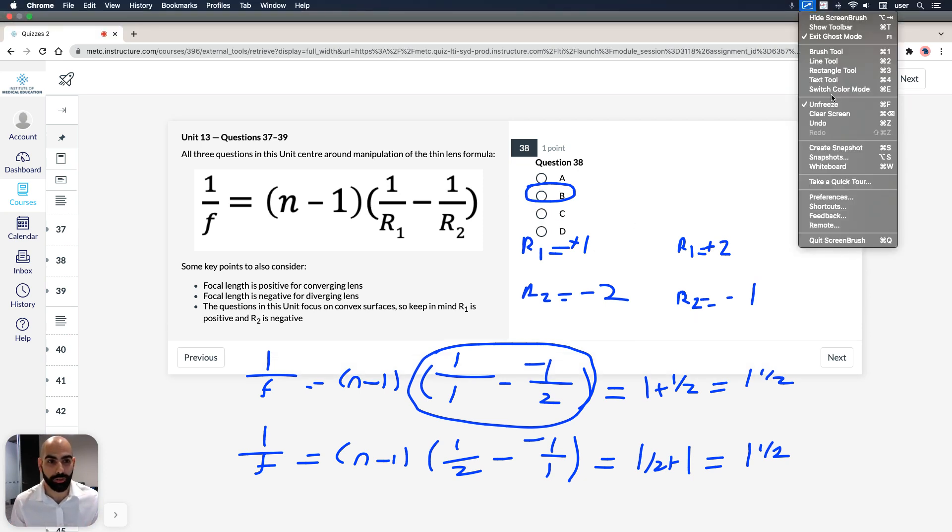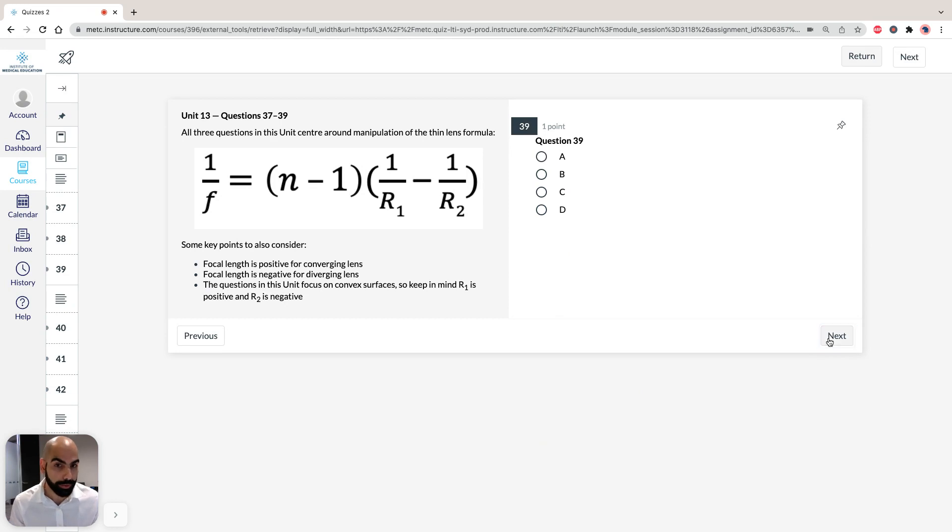So now, last question, 39. It requires some arithmetic, but again, just have to use some brain power here. It says, consider a symmetrical bi-convex lens that has a focal length as long as its radius of curvature. So if it's symmetrical, R1, R2 is going to be equal, so the lengths are going to be equal, but it's also telling us that the focal length is the same as the radius of curvature.